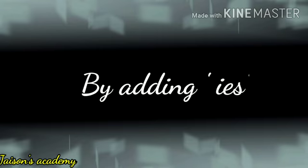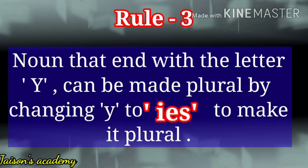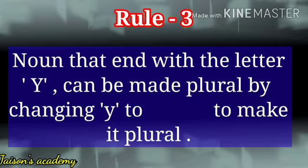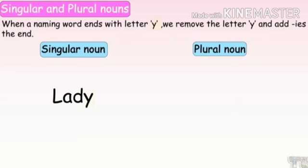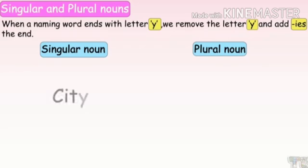Rule number 3: nouns that end with the letter Y can be made plural by changing Y to IES. When naming words end with the letter Y, we remove the letter Y and add IES at the end. For example: lady — remove Y and write IES — ladies.